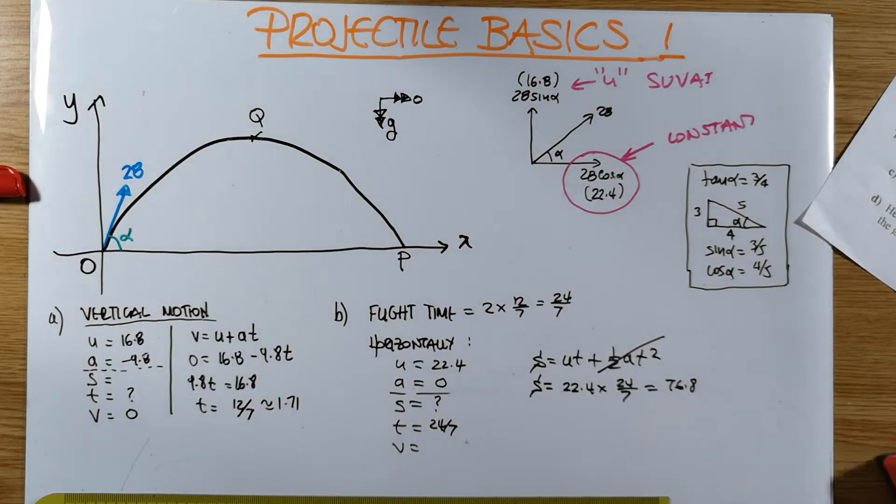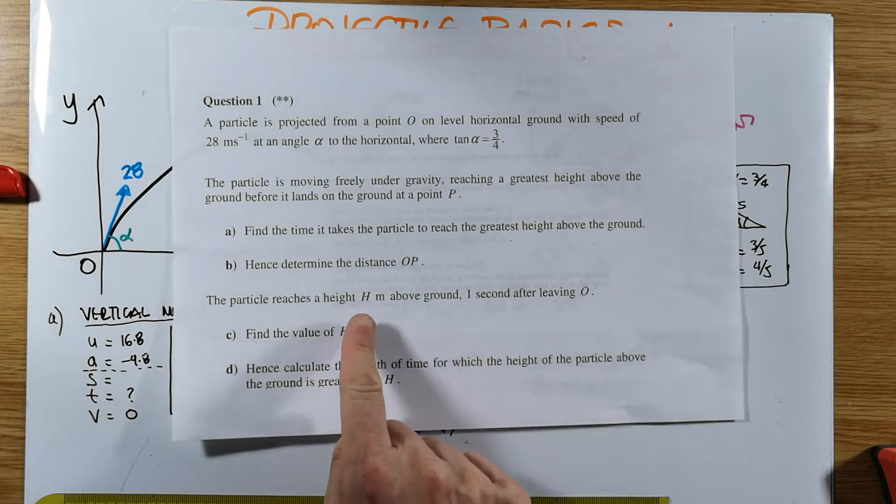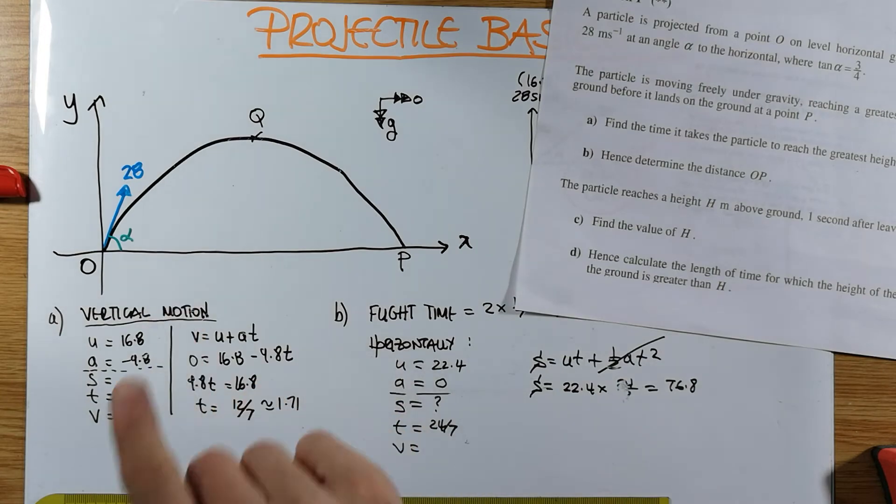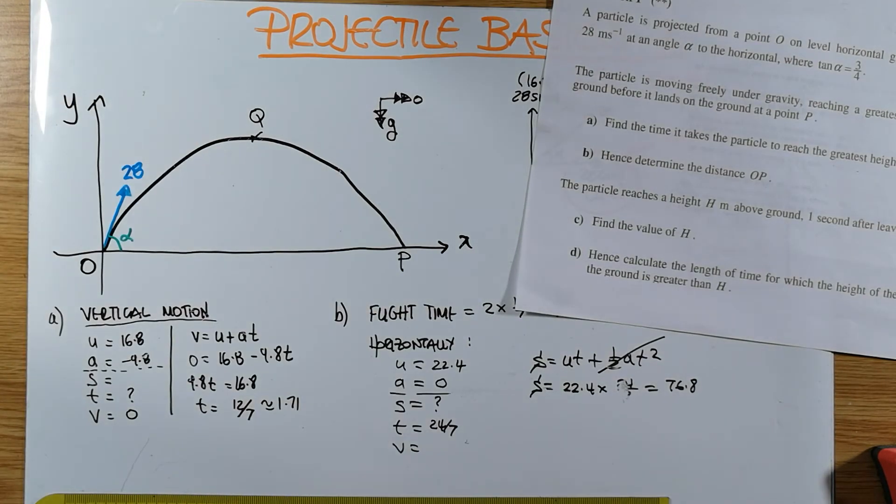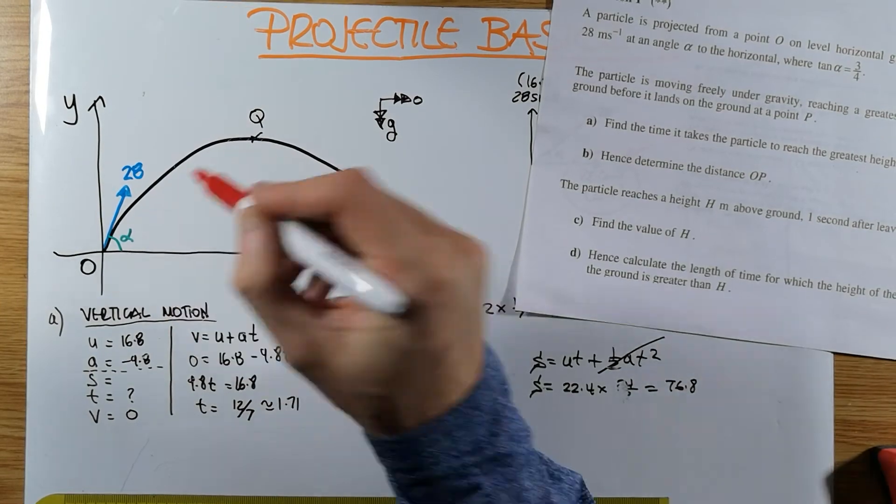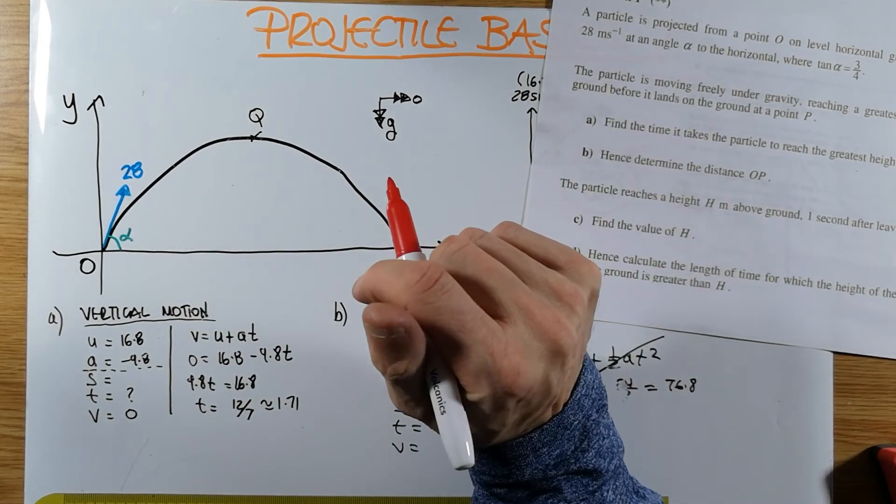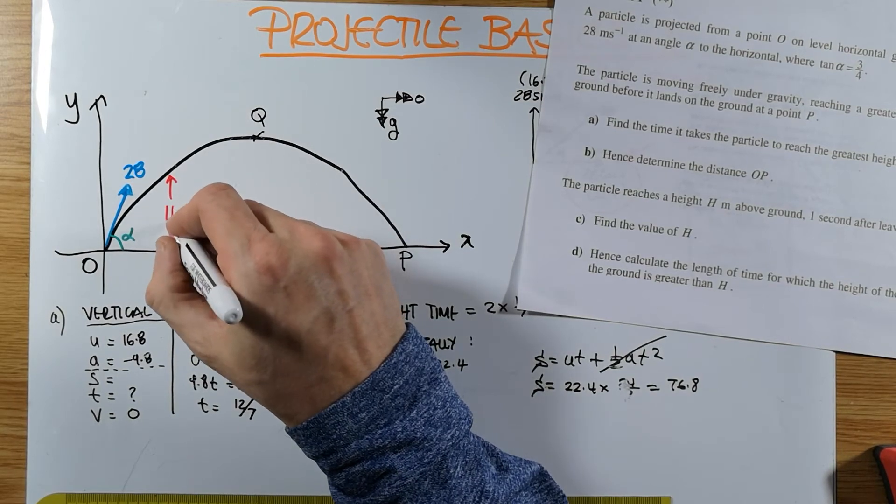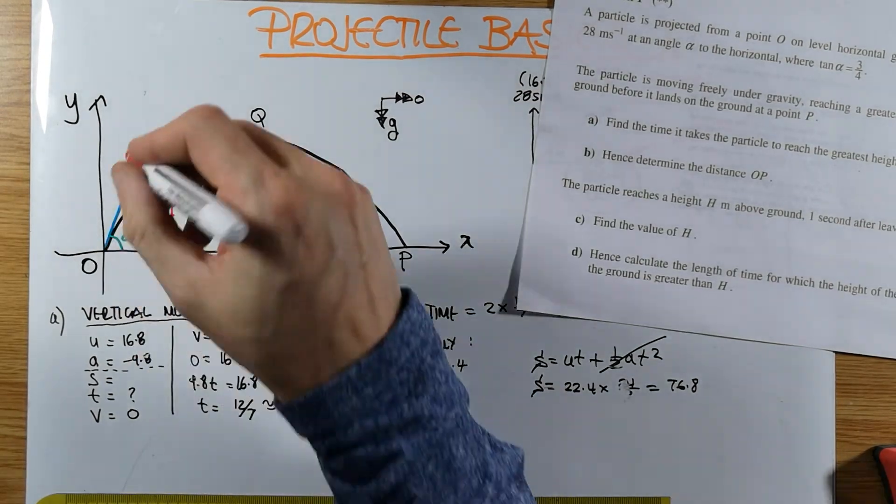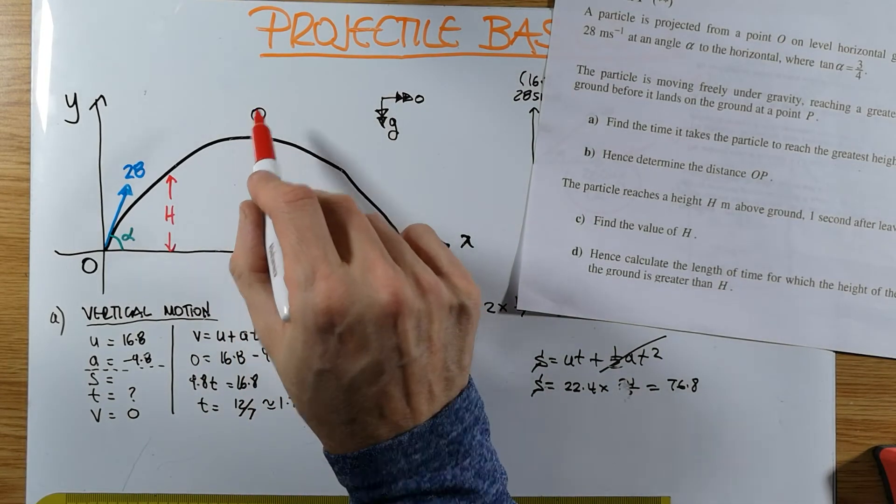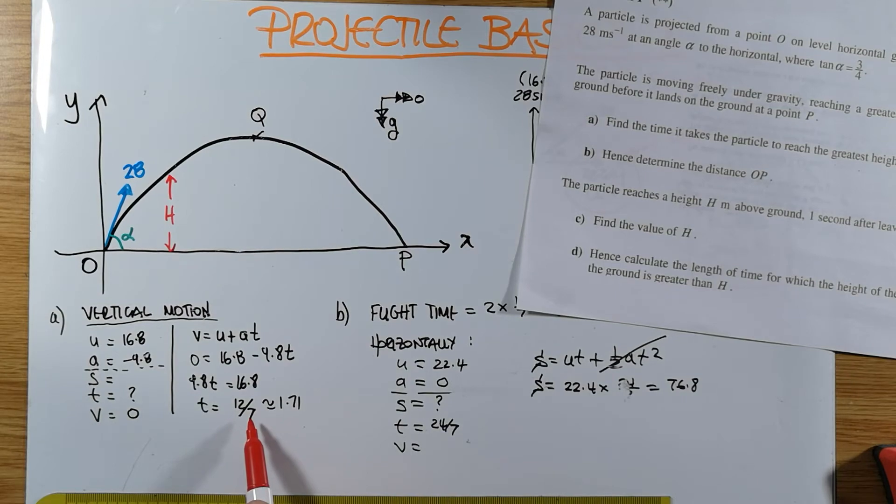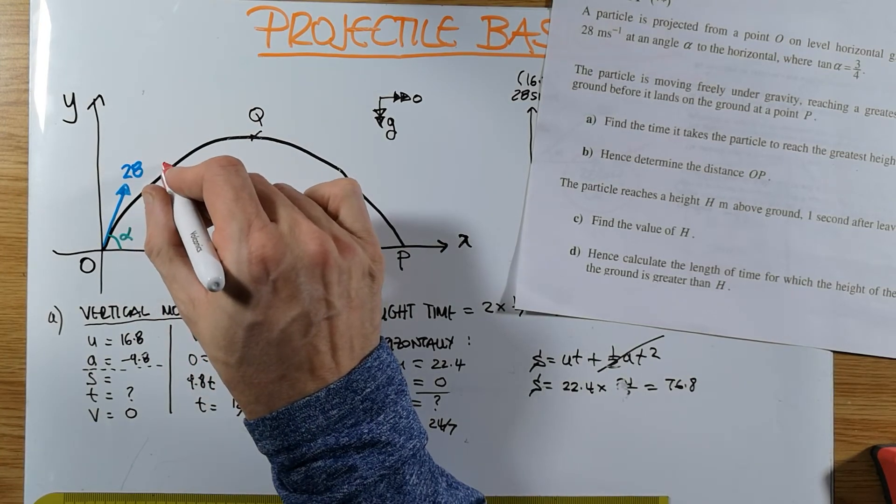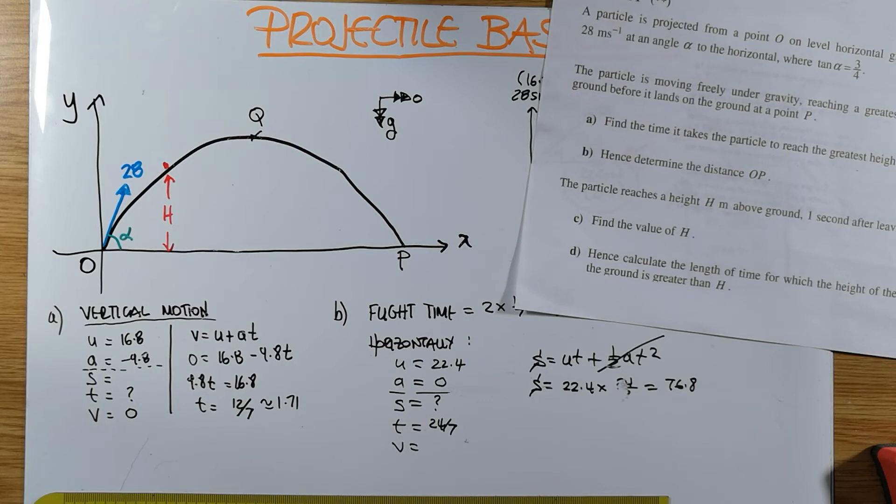We found the distance O-P. And now the question, part C, is asking the particle reaches a height H meters above the ground one second after leaving O. So after one second, the particle is at the height H meters above the ground. Is it on this side or is it on this side? In most cases, it wouldn't really matter. But we definitely know it's on the way up.